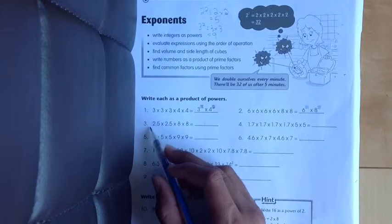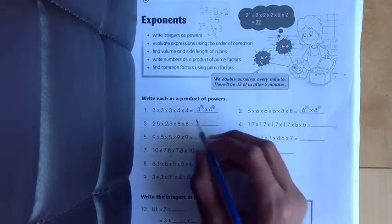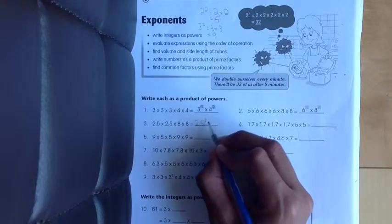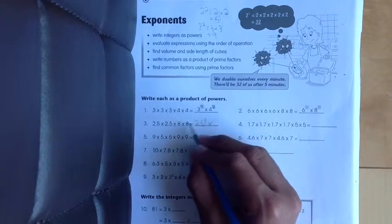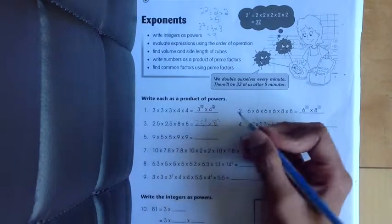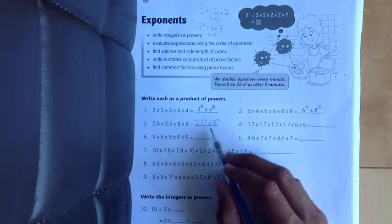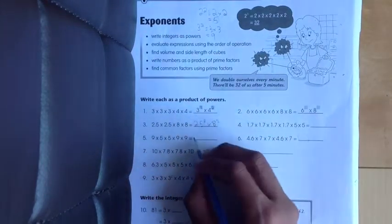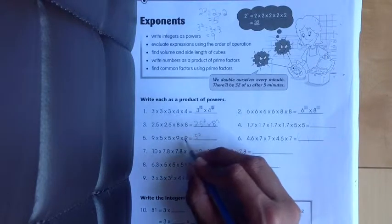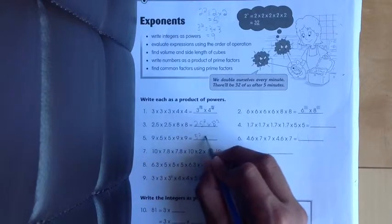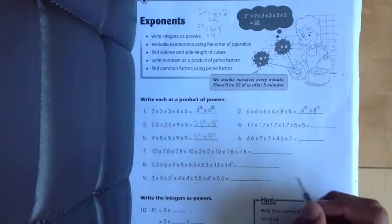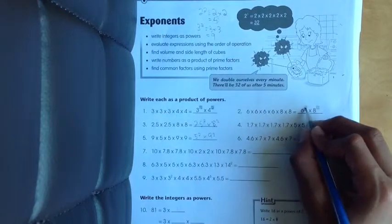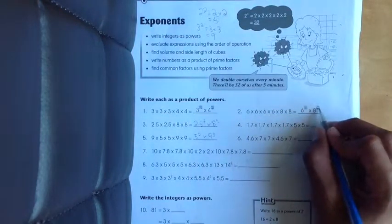In question number 3 we see 2.5, 2.5. So 2.5 to the power of 2 times, and we see 2 8's, 8 to the power of 2. And keep on going just like this: 5 times 5, 5 to the power of 2, and 9, there are 3 9's, so 9 to the power of 3. Pretty easy.